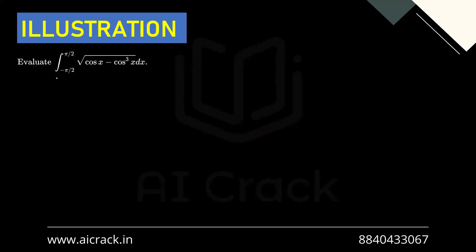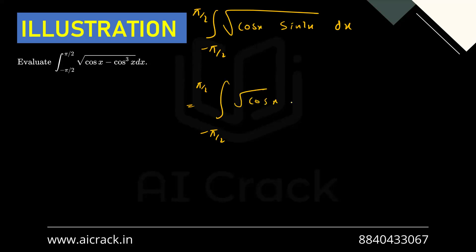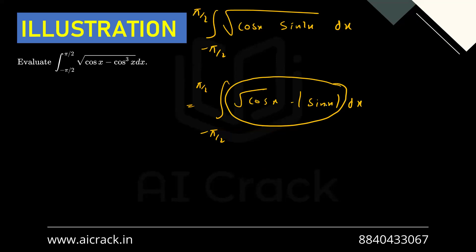Now let's solve this example: integral from −π/2 to π/2 of √(cos x − cos³x) dx. This can be written as the integral of √(cos x · (1 − cos²x)) dx, which equals √(cos x · sin²x) = √(cos x) · |sin x|. Now the definition changes because of |sin x|: sin x is negative from −π/2 to 0 and positive from 0 to π/2. So we have to break this function into two parts at x = 0 — keep this as homework, similar to the last example.